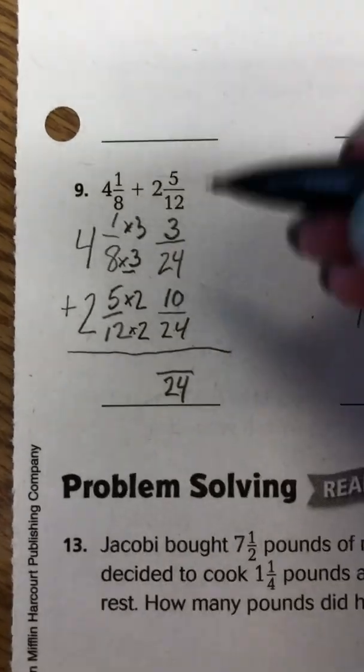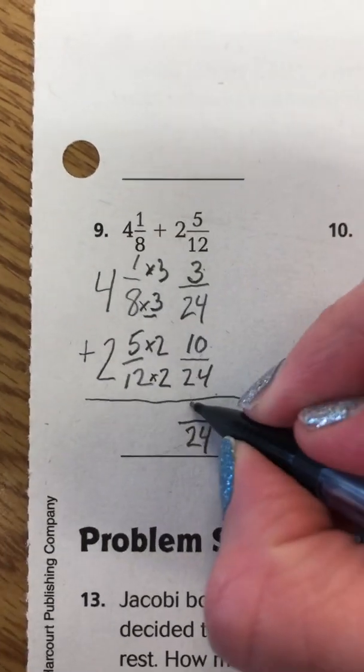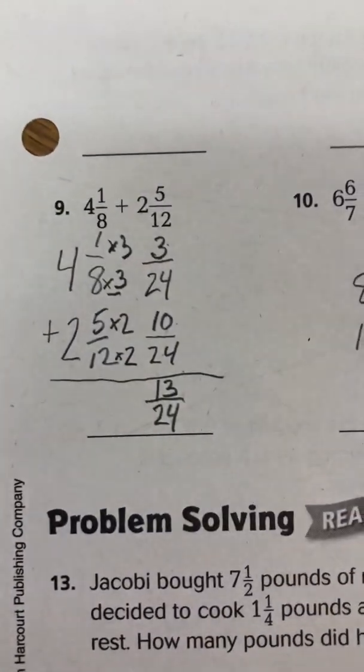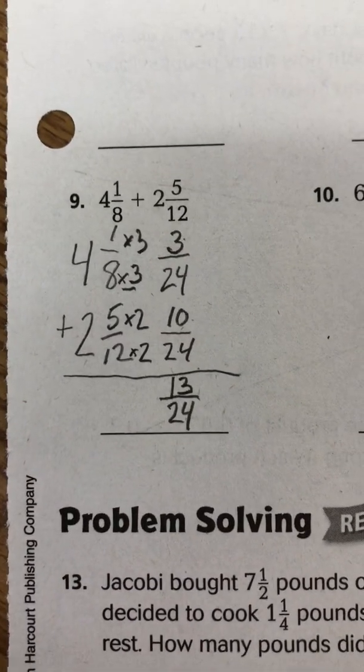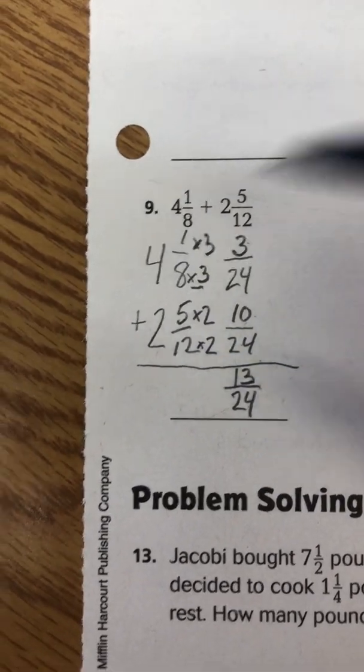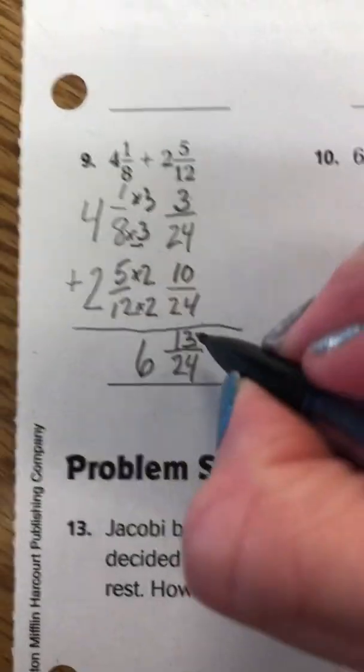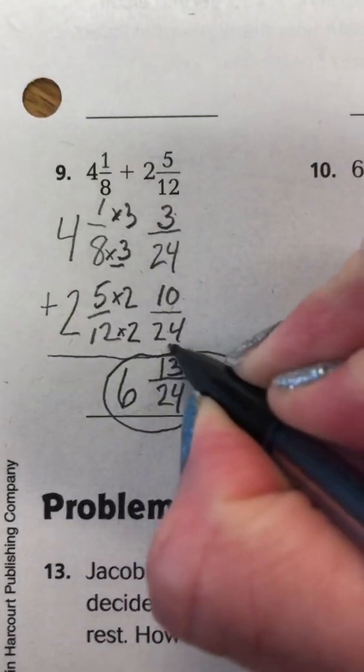So now we're going to add. We're going to add only the numerators. So 3 plus 10 is 13. So that gives us 13 twenty-fourths. And now we're going to go to our whole numbers and add. So 4 plus 2 is 6. So our final answer is 6 and 13 twenty-fourths.